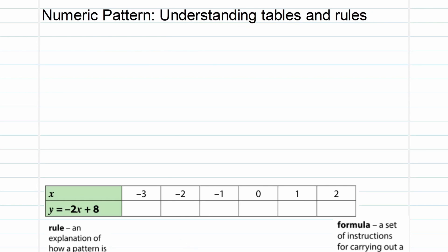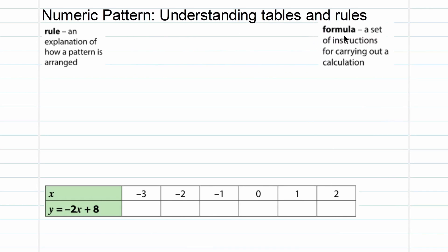So what is a rule and what is a formula? A rule is an explanation of how the pattern is arranged. For instance, y equals -2x plus 8. If I would say that in words, I would say a value times -2 and then you have to add 8, and that will give us the output value. But if I should put that into a formula, a formula is a set of instructions for carrying out a calculation. So then I would say y equals -2x plus 8.